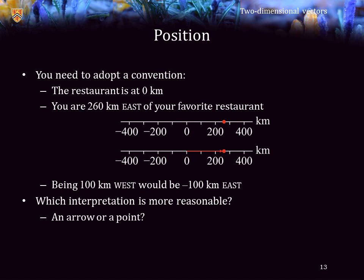100 kilometers west would be represented as negative 120 kilometers east. So again, which interpretation is more reasonable here, an arrow or a point? As a location, I think a point would be more reasonable.